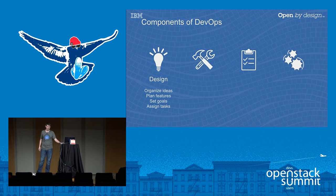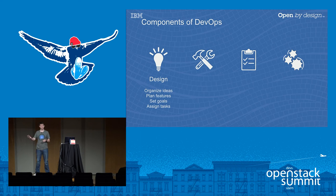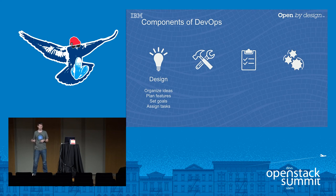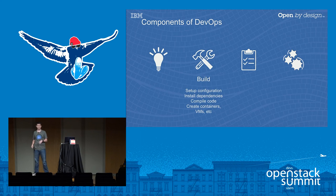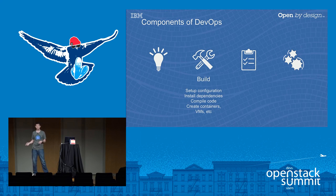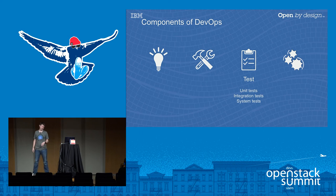A DevOps architecture — this is just one example, there could be others. The first part of the pipeline would be: first you design — organize your ideas, pass out tasks to team members, plan features, divide those into microservices, set goals like 'we'll have this particular page done in a week.' Next, build — you set up the automation initially, and after that the automation installs dependencies, compiles the code, creates any containers or OpenStack VMs it needs. Then test — an automated part of the process, depending on which stage of development you're in.